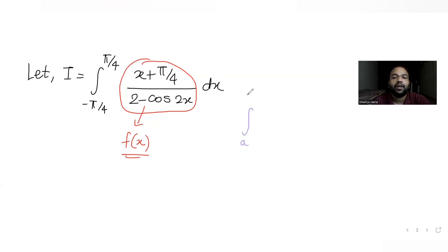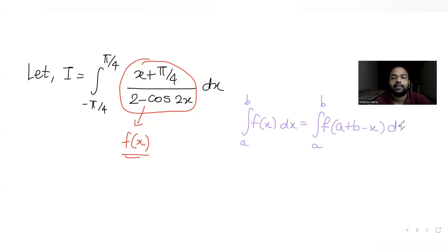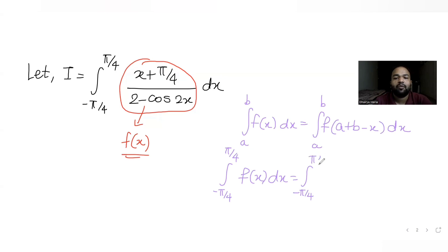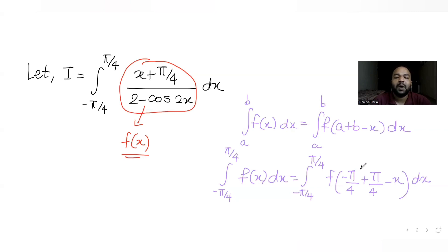Using the property that says ∫[a to b] f(x)dx = ∫[a to b] f(a+b-x)dx, with limits from -π/4 to +π/4, I can write I = ∫[-π/4 to π/4] f(a+b-x)dx. Since a = -π/4 and b = π/4, a+b = 0, so f(a+b-x) = f(-x).